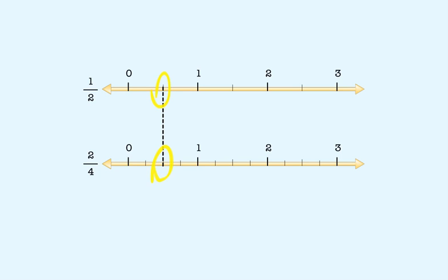We can show that the fraction one-half is equivalent to the fraction two-fourths. The dotted line shows that the point on the first number line for one-half is the same as the point on the second number line for two-fourths. That means both fractions are expressions for the same point on the number line, which means they represent the same number. In this lesson, you'll learn how to construct a fraction that is equivalent to another fraction.